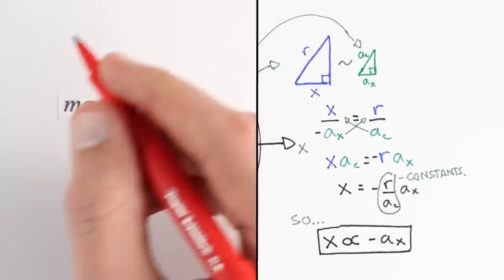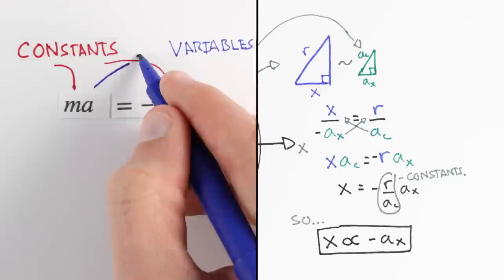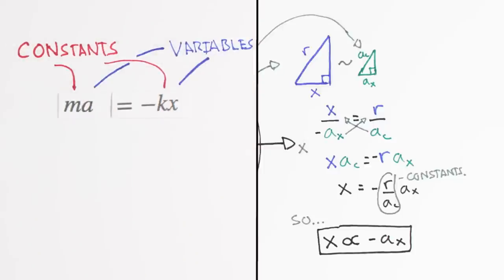Remember that our spring yielded almost an identical formula. The only difference is our constants. Since constants only change the rate and scale of our motion, and not the motion itself, we've found our connection.